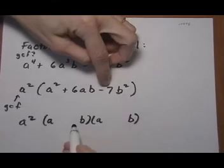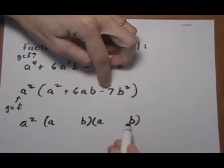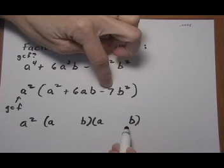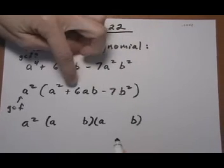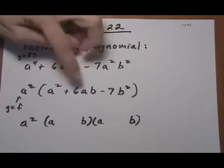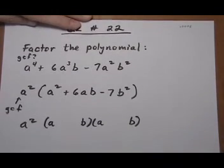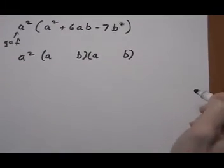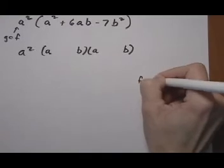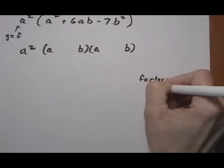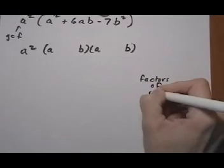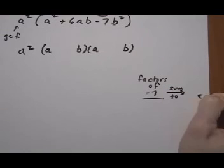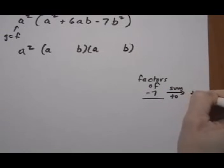And we also want some numbers attached to the b because we want to have two numbers that multiply to give a -7 and add up to give a +6. So let's look at factors of the last term -7 that sum to the middle term +6.